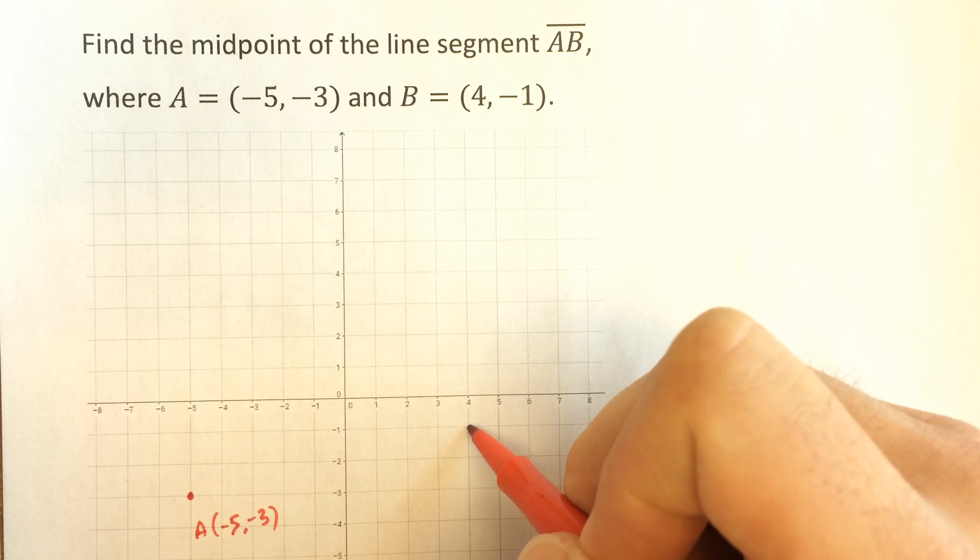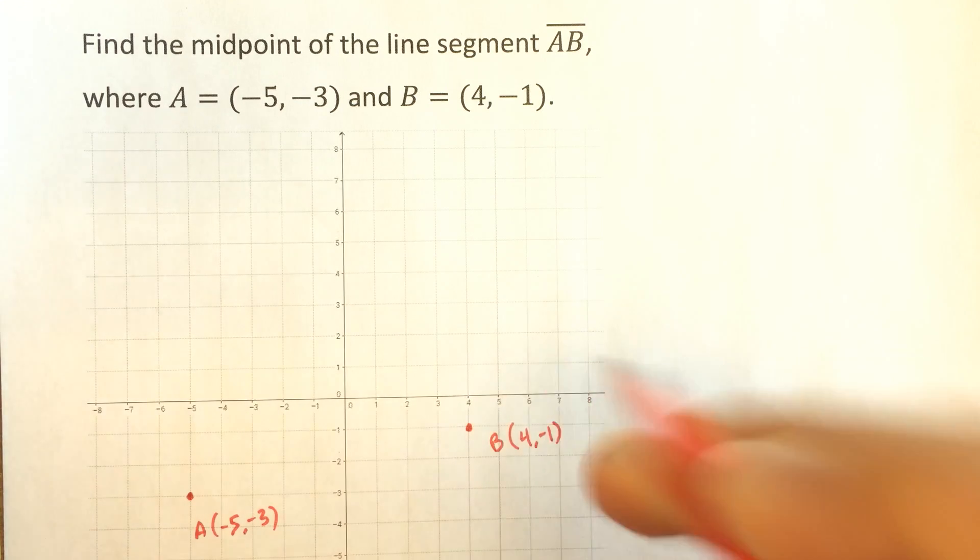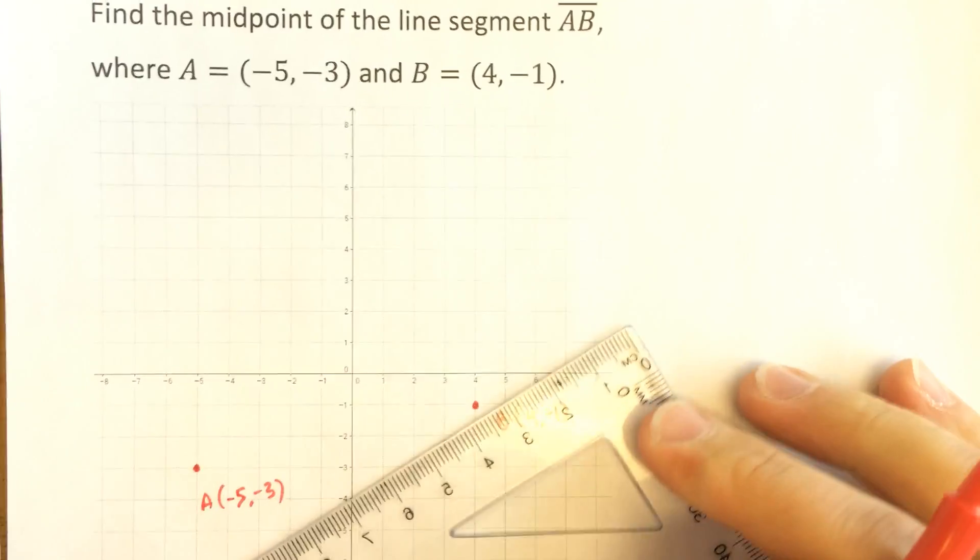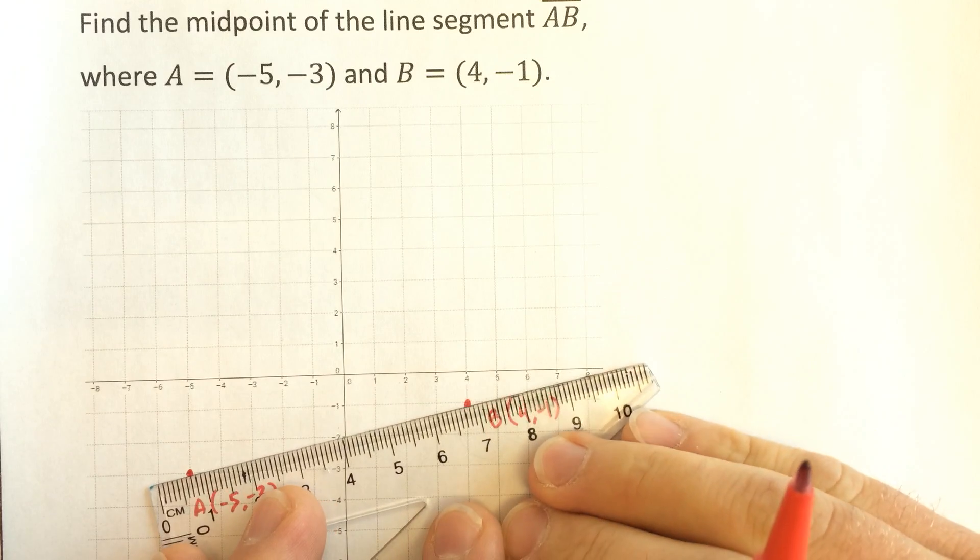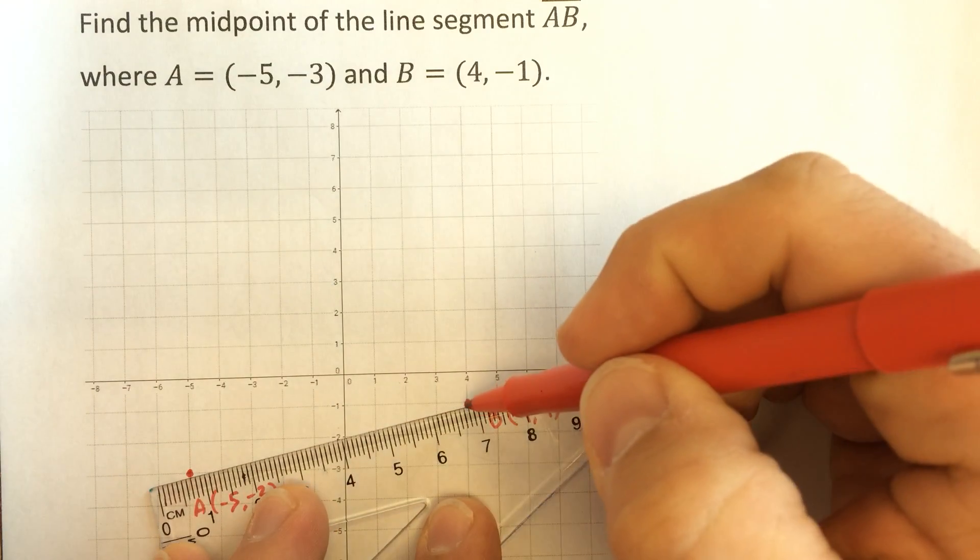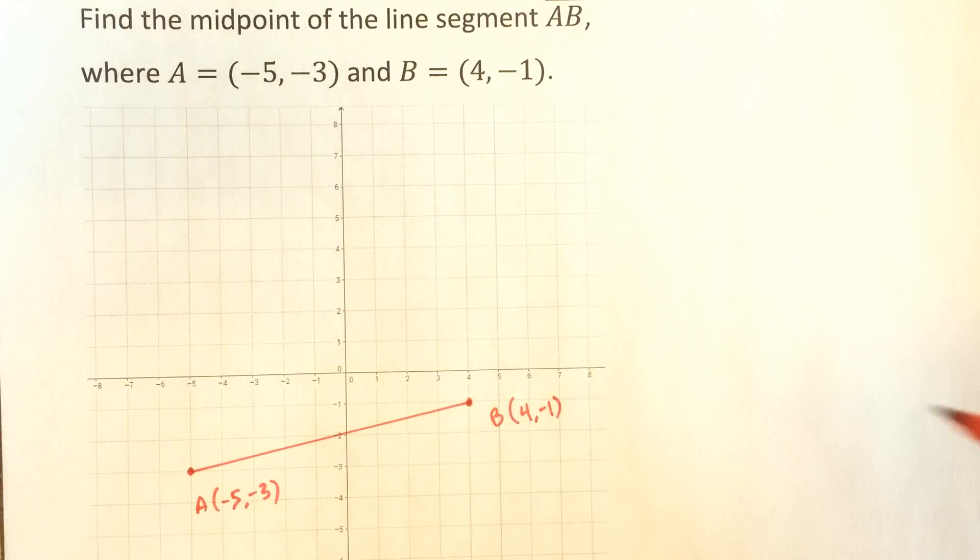And B is 4, negative 1, just down here. I'm going to connect those. But I'm being careful not to draw a line here. This is only a line segment, so it doesn't continue and extend with arrows in each direction.